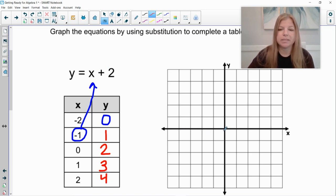Now I go ahead and I plot my points. So negative 2, 0. So my first ordered pair, negative 2 on the x, 0 on the y is right here. Negative 1, 1. So negative 1 on the x, positive 1 on the y is here. 0, 2. So 0 on the x, 2 on the y. 1, 3. So 1 on the x, 3 on the y. And then 2, 4. 2 on the x, 4 on the y.